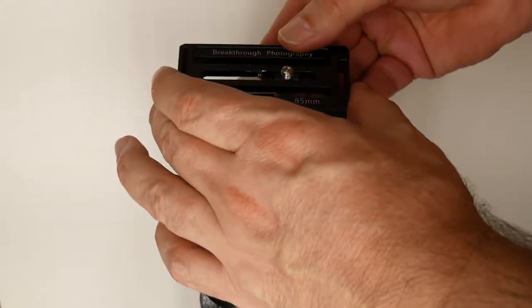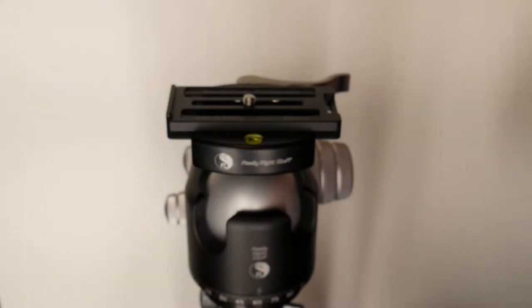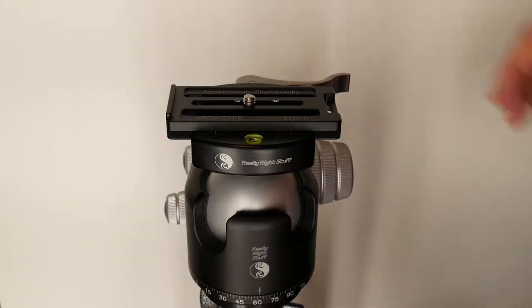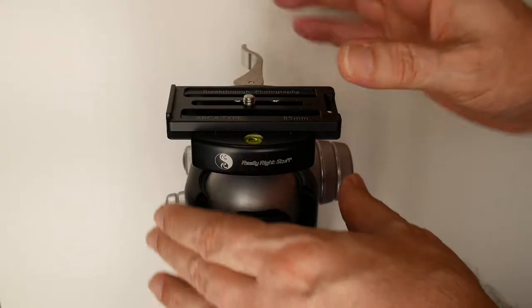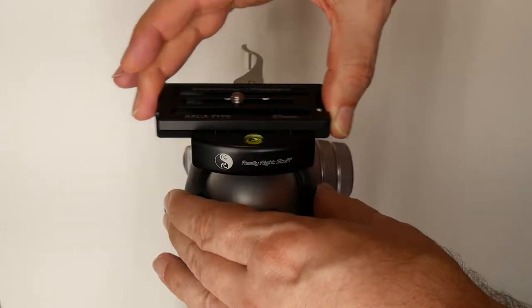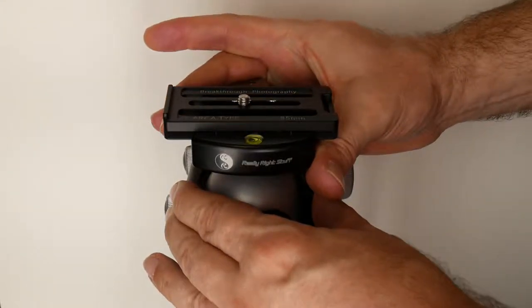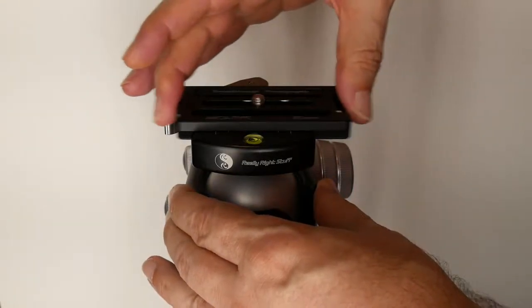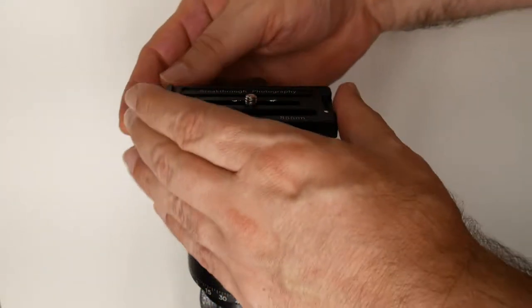I don't recommend the 85mm if you have a really right stuff clamp, and this is the reason why. If I put the clamp in the middle position, that's fine, it's not going to come out. But when it's in the locked position, we still have play, and we shouldn't have play in the locked position.